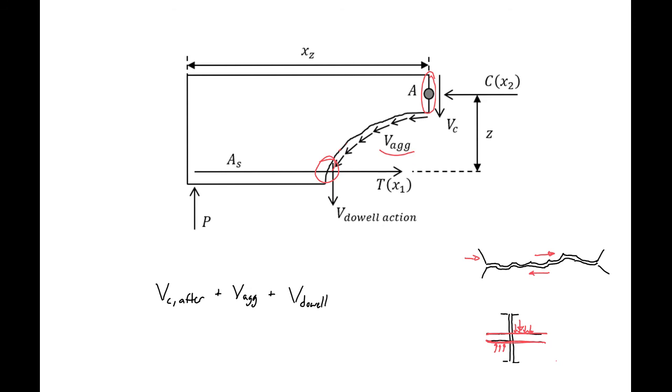When we're using the ACI code we don't calculate any of these after cracking components, because we assume that our VC after plus our V aggregate plus our V dowel is greater than or equal to our shear strength before cracking. So if we calculate our VC before cracking and it's conservative, then we just use VC before for the life of the beam whether it's cracked or uncracked.